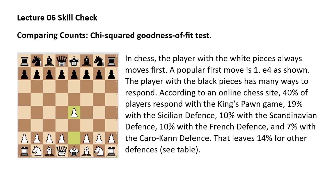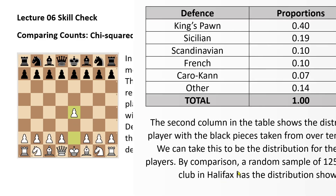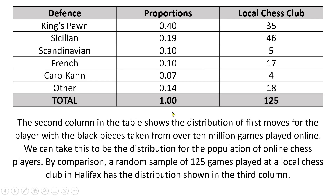In the current example, we're looking at chess games — specifically the different defenses that the player with the black pieces can play when white starts the game with the king pawn two squares forward. There are a number of defenses that can be played: the king's pawn opening, Sicilian, Scandinavian, French, Caro-Kann, and a whole bunch of other minor defenses, which are grouped into one category.